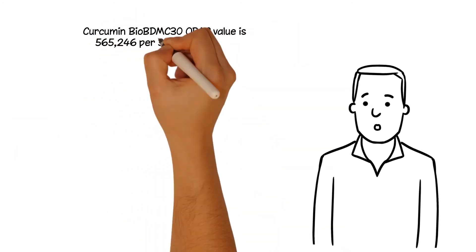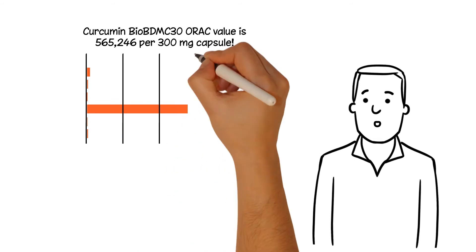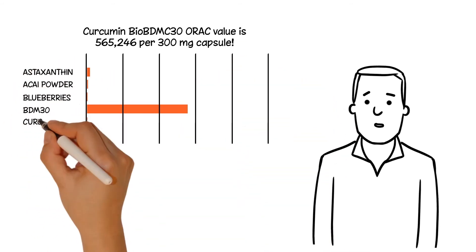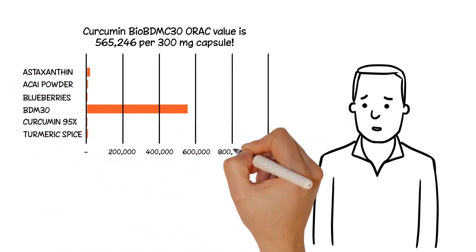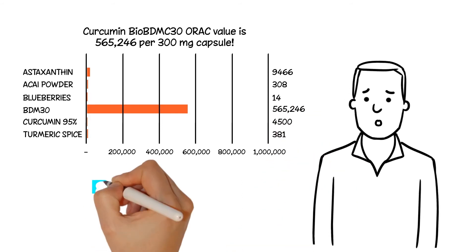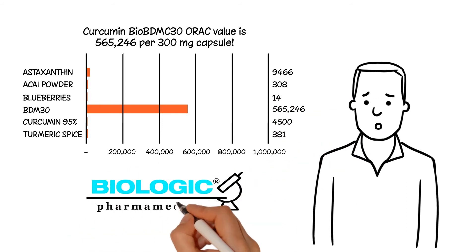The antioxidant activity of BioBDMC30 is unprecedented, measuring in the millions per gram compared to regular curcumin measuring 5,000 to 9,500 per gram.